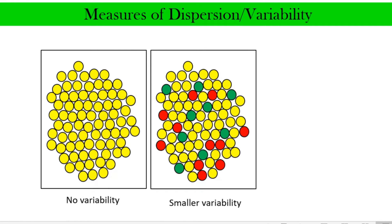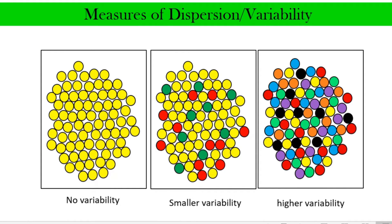In our second image we see that some circles are red and some are green, and in terms of variability or dispersion we say that it has a small but greater variability compared to the first one. In our third image, the circles inside the rectangle have different colors, and because of that we associate this one with a data set of high variability.